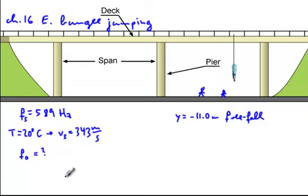And then the equation that we should use is, source moving away from stationary observer? Nope. Source moving toward stationary observer. So that equation would be f_o equals f_s times 1 over 1 minus v_s over v.